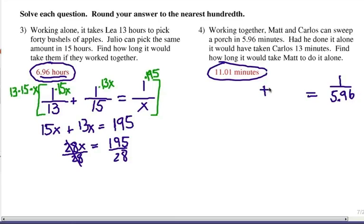What are their individual work times as fractions? Had he done it alone, Carlos would take 13 minutes. So let's go 1 over 13. And find how long it would take Matt to do it alone. 1 over... Now let's use m, I guess, for Matt. We could certainly use x.